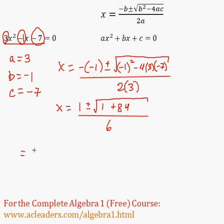Okay, so here we have 1 plus or minus root 85, all over 6. And at this point, we're actually done. Why is that?